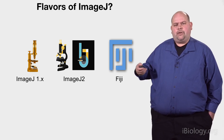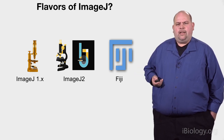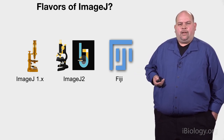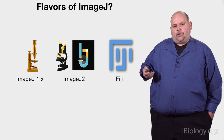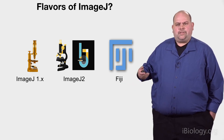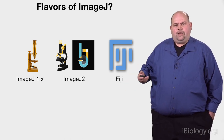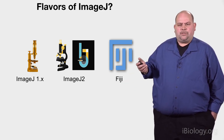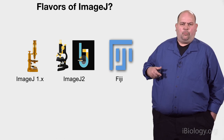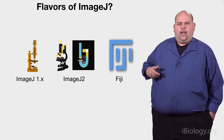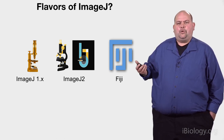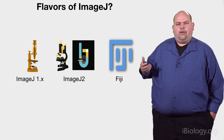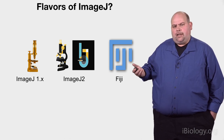ImageJ2 is basically the next generation of ImageJ, designed to allow easier ability to collaborate with other tools and interoperate with more modern plugins, while also remaining compatible with old plugins. It also enables new features such as better support for big data, better updating, and better scripting.